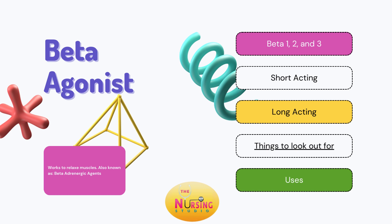So again, beta-1, beta-2, beta-3 — and we're talking about the beta-2s because we are focusing in on those common treatment options for our COPD and asthma patients. Those beta-2s are the ones commonly utilized for lung management; they are that bronchodilator. There are two types: your short acting as well as your long acting. The short acting beta agonist is commonly known as your SABAs — S-A-B-A — which is just an abbreviation of short acting beta agonists.